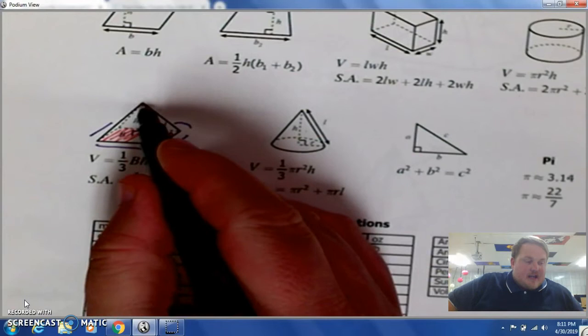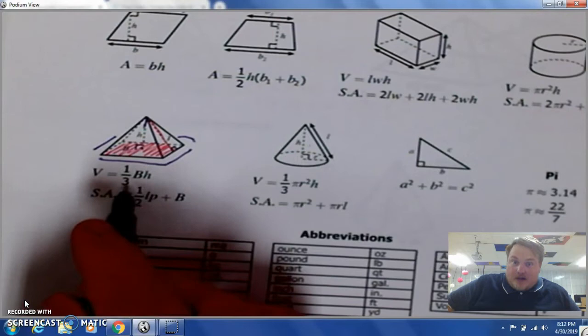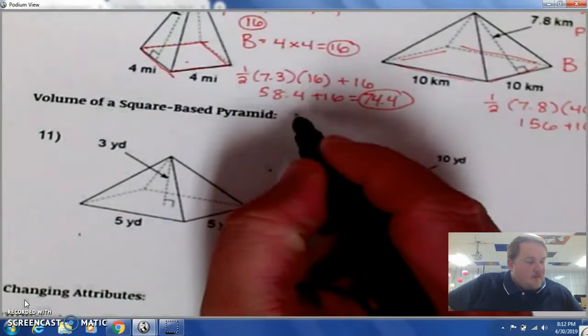And big B, remember, it's the area of the bottom. Think of B as the bottom of the sheet. So volume is 1 third big B, little h.